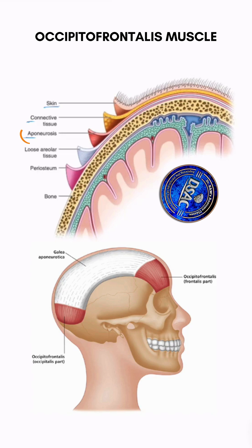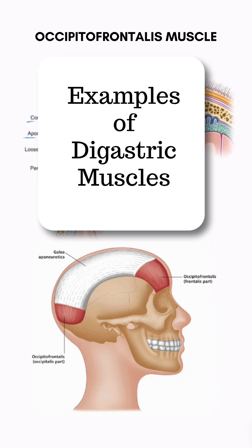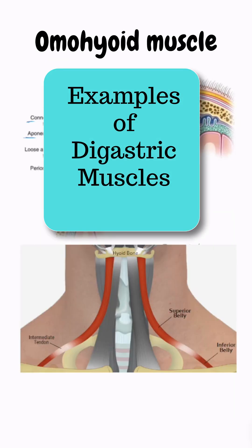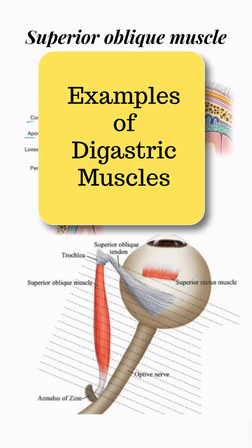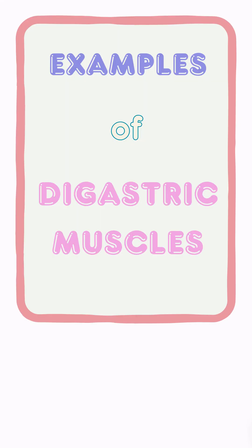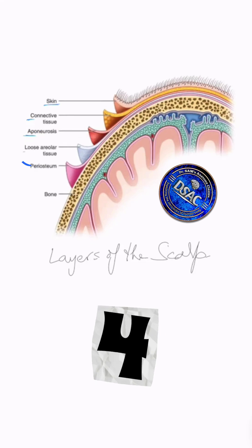Which muscle is that? Occipitofrontalis. Remember, digastric muscles means there are fleshy bellies at the two ends and in between is the tendon, which may be tendinous cord-like or aponeurotic. So occipitofrontalis, digastric, omohyoid, and the superior oblique muscle of the eyeball — all are examples of digastric muscles.